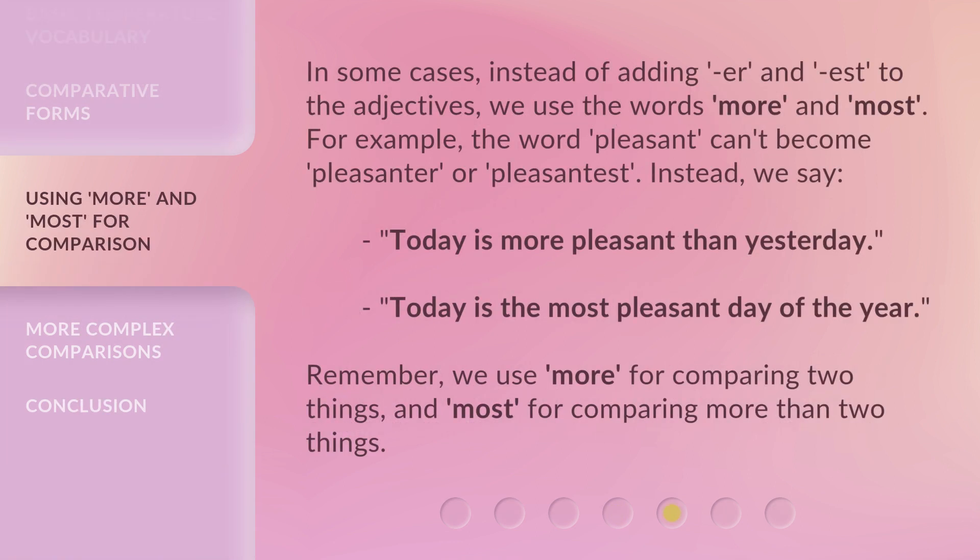In some cases, instead of adding -er and -est to the adjectives, we use the words more and most. For example, the word pleasant can't become pleasanter or pleasantest. Instead, we say, "Today is more pleasant than yesterday," or "Today is the most pleasant day of the year." Remember, we use more for comparing two things, and most for comparing more than two things.